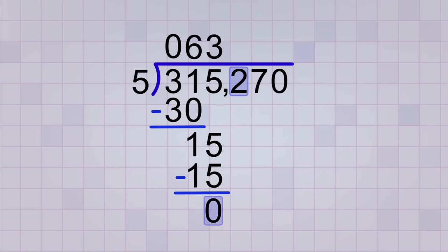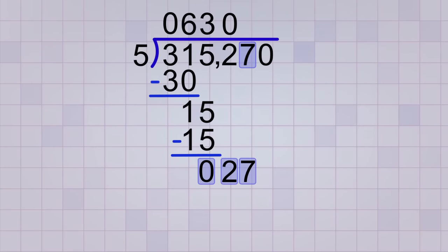On to the next digit. Now even though our previous remainder was 0, we still bring down a copy of the next digit. Now we ask how many times will 5 divide into 2? 0. 5 is too big, so we need to move on to the next digit and bring a copy of it down also. There. That's better. Now we ask how many times will 5 divide into 27? 5. 5 times 5 is 25, and 27 minus 25 gives us a remainder of 2.